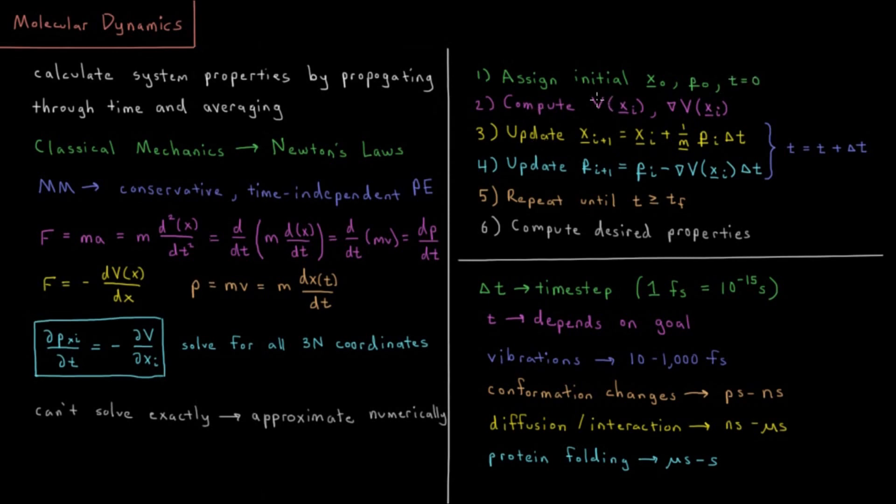Then we're going to compute our energy, potential energy, compute the gradient of the potential energy. We're going to update our coordinates. The next iterations coordinates are going to be the current iterations coordinates, plus the velocity times delta t. So we have one over mass times momentum, which is just velocity. So we have x plus velocity times delta t. Then we update our momentum. Our new momentum is going to be our old momentum minus the gradient of our potential energy times delta t, which is going to be our acceleration.